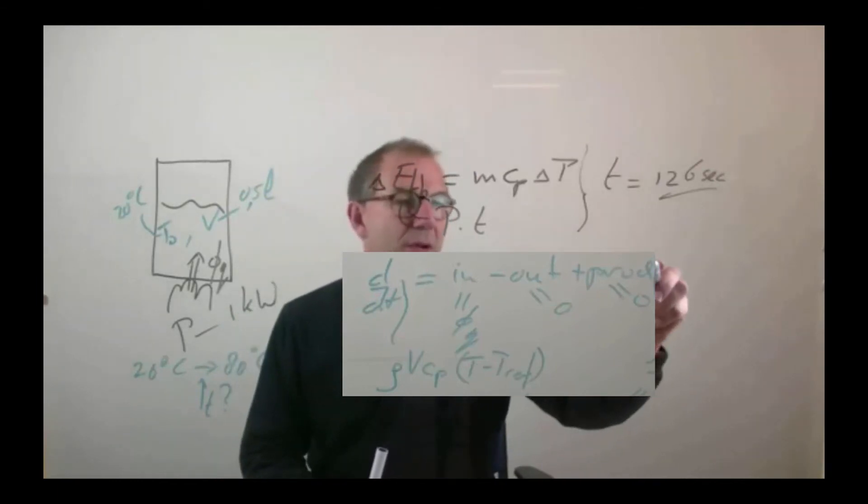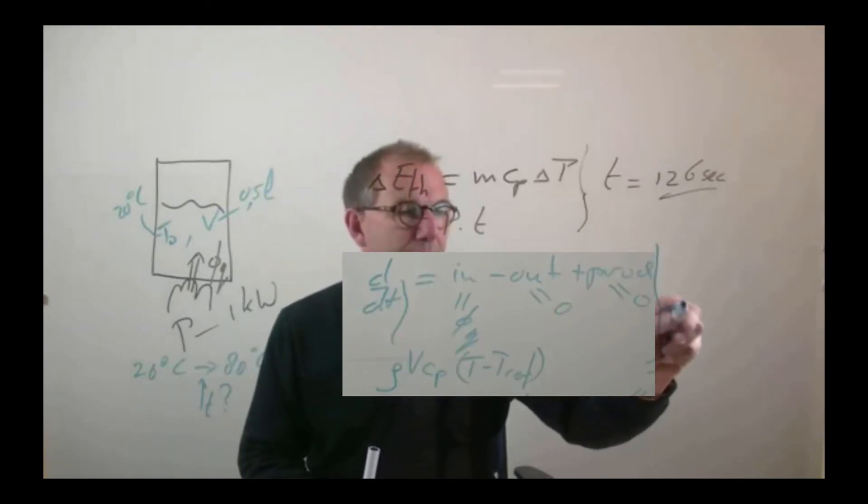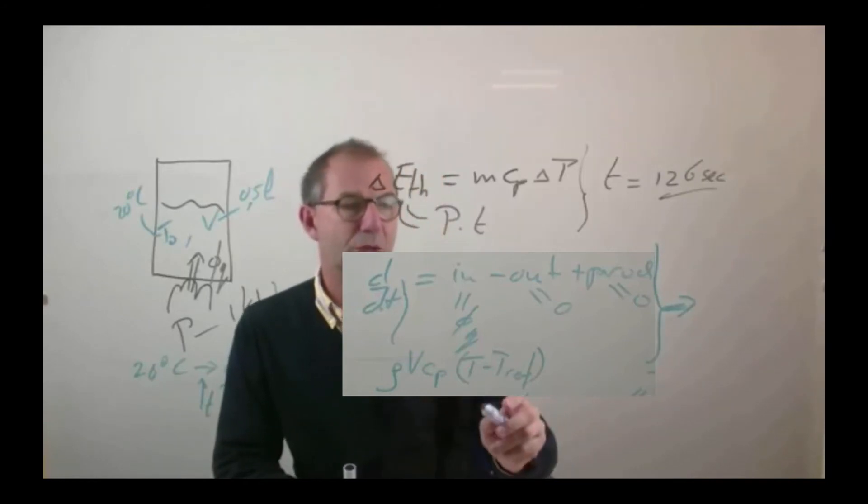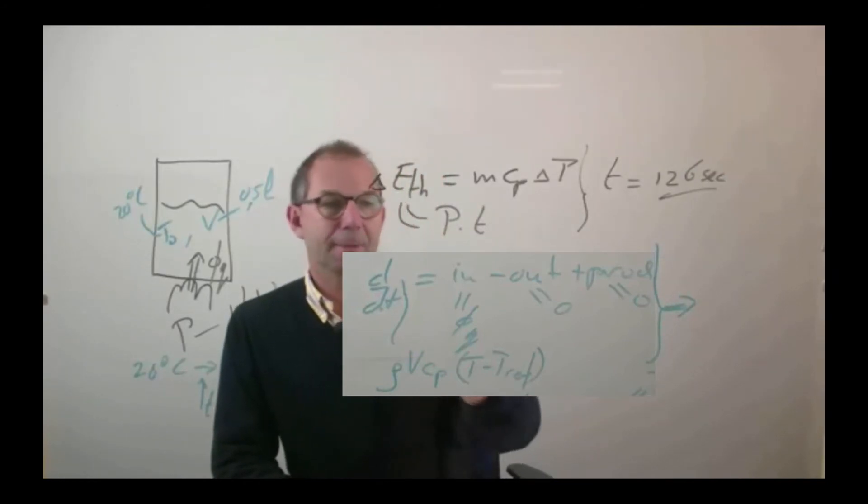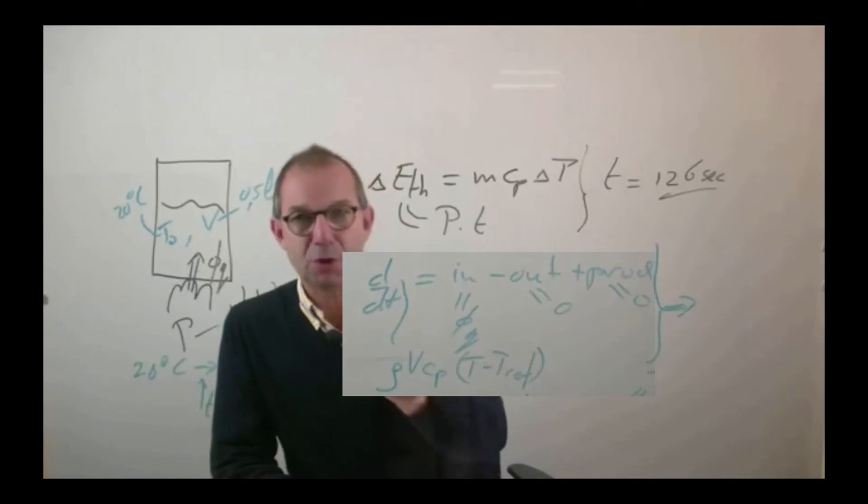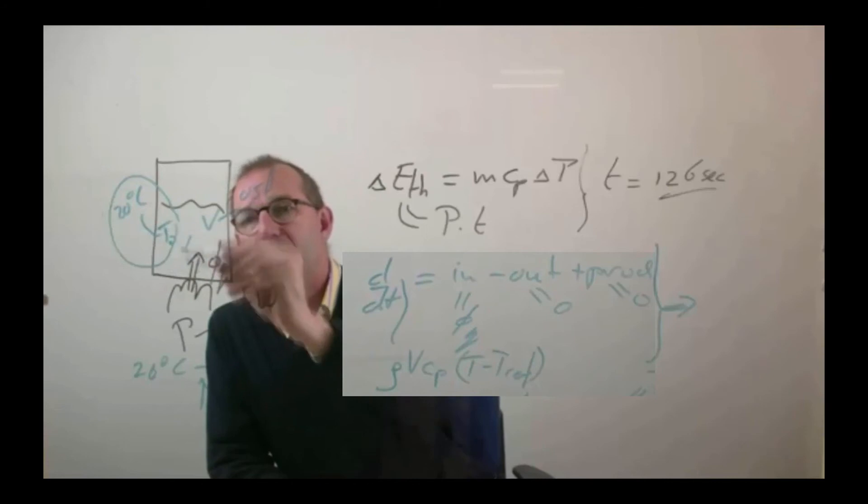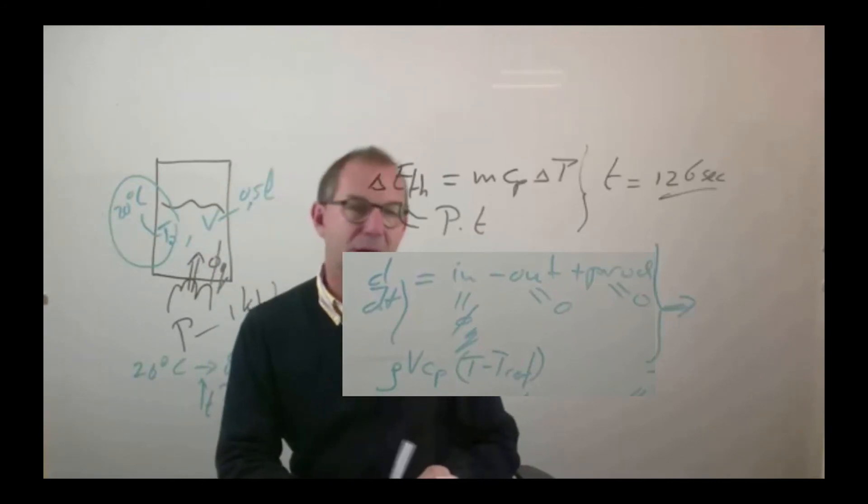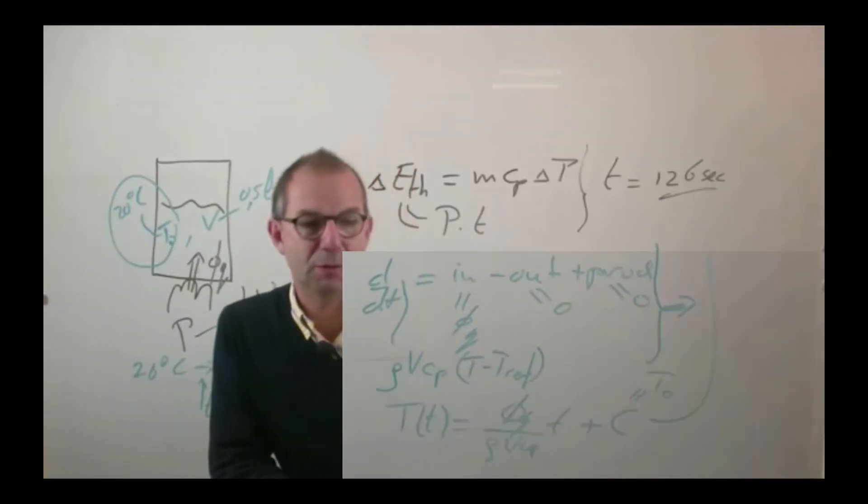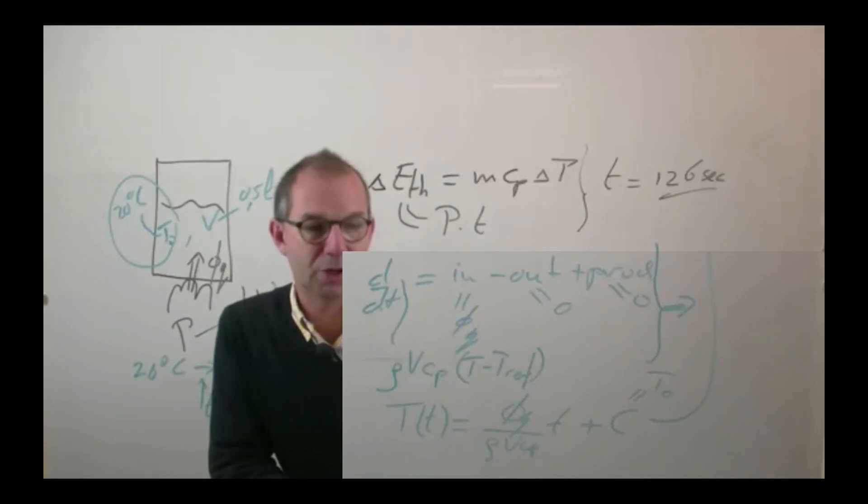This, we have done before, is a not too difficult differential equation. We need to integrate once, so we need one boundary condition, initial condition, and that is listed here. At time T equals 0, I have given temperature, so this gives me for the temperature change over time, phi q over rho V Cp.